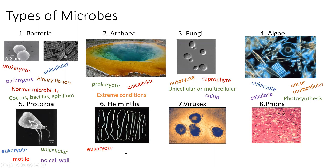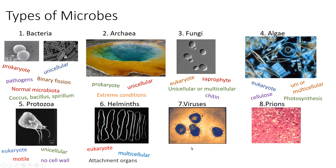Next up are helminths, which is a fancy word for worm. You might say you can see a worm with your eye, and that is true, but part of the helminth life cycle is microscopic — so that's why we include them here. Helminths are multicellular, and they are really distinguished by having attachment organs. Some have hooks; some have lip structures or suction structures that allow them to attach and hold on to their host and essentially rob them of their nutrients.